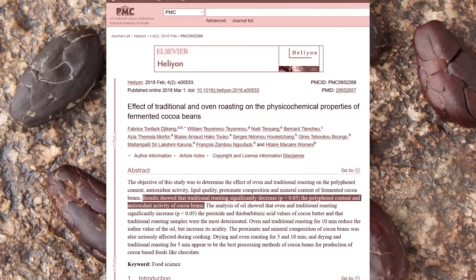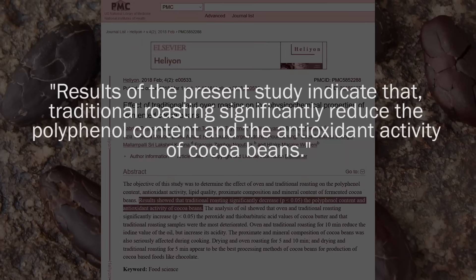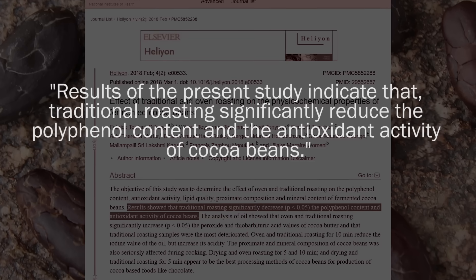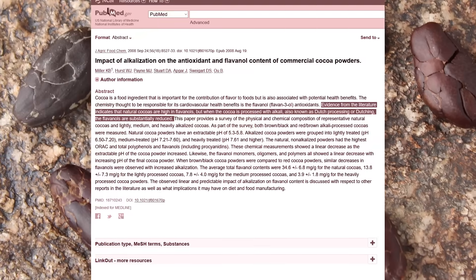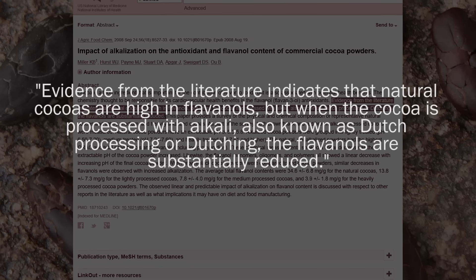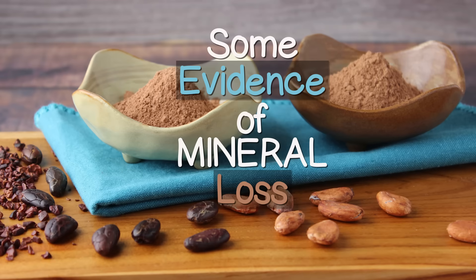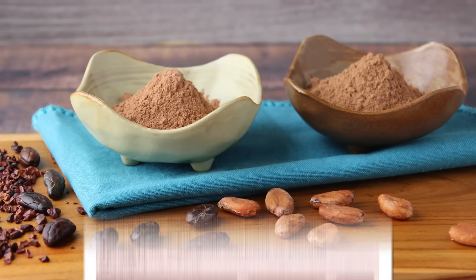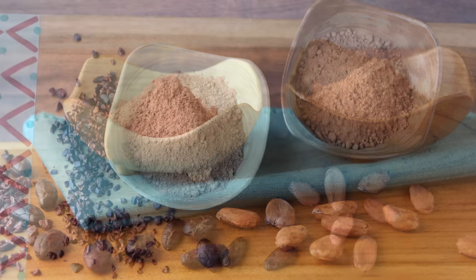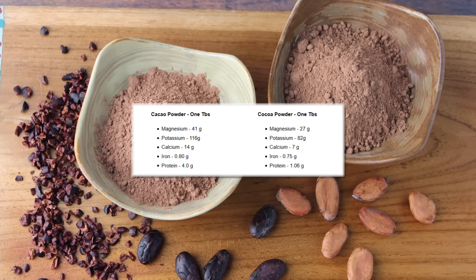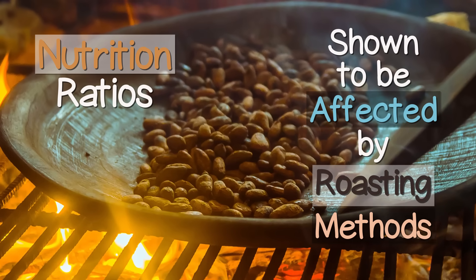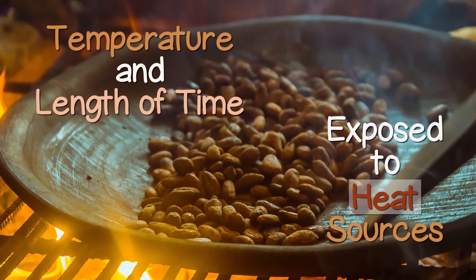In a 2018 published study, results indicated that traditional roasting significantly reduced the polyphenol content and antioxidant activity of cocoa beans. In other research, Dutch processed cocoa using a chemical alkali has also been shown to substantially reduce flavonoid content. There is also some evidence of mineral loss when comparing the USDA food composition of cacao powder vs cocoa powder — data showed an average of one-third or greater loss of some minerals except for iron. Nutrition ratios are shown to be affected by roasting methods, temperature, and length of time exposed to heat sources.